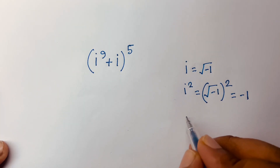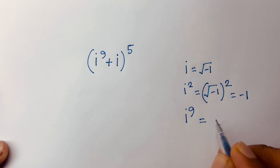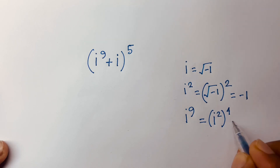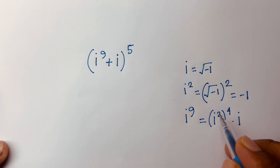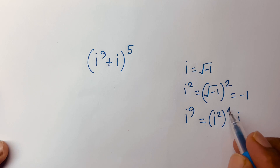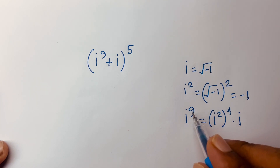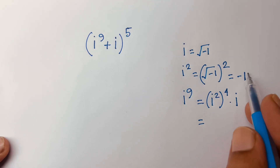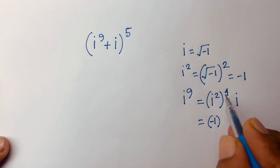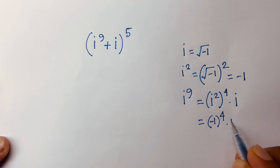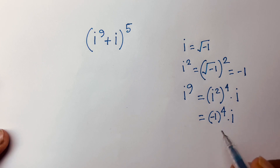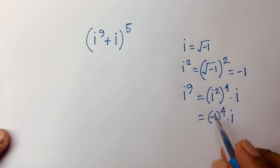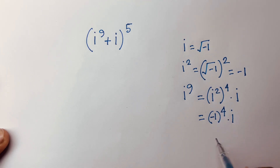Now, i to the power 9 equals (i²)⁴ times i, because 2 times 4 is 8, and 8 plus 1 is 9. Since i² equals minus 1, we get (−1)⁴ times i. Since the power 4 is an even number, (−1)⁴ equals plus 1.